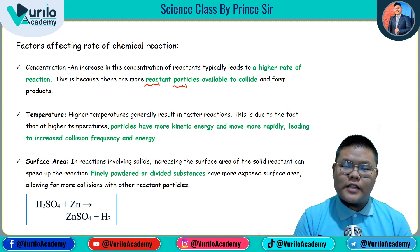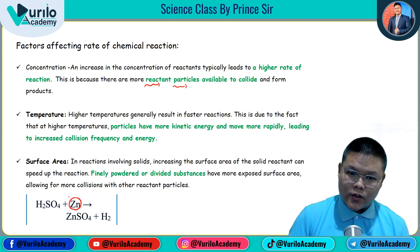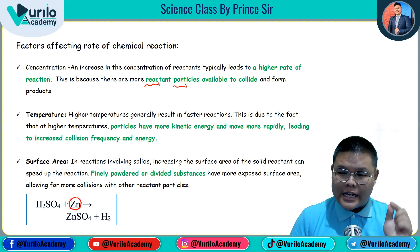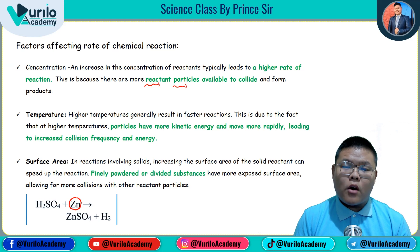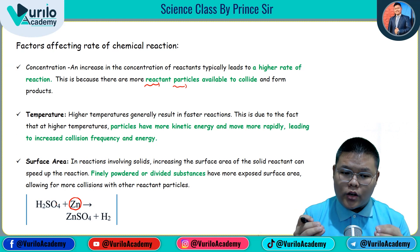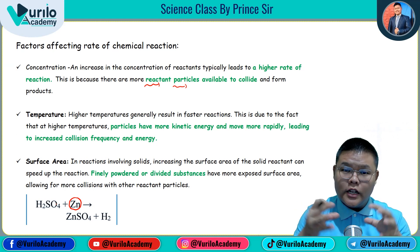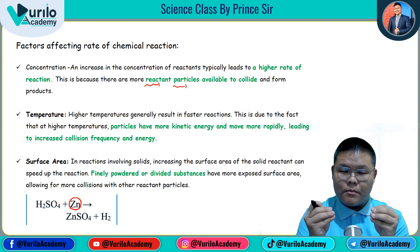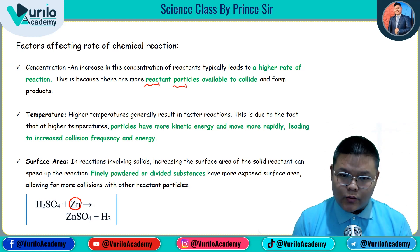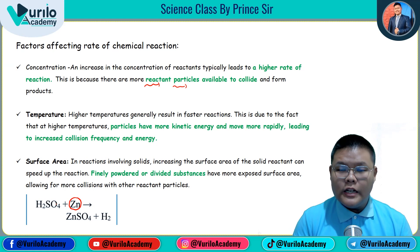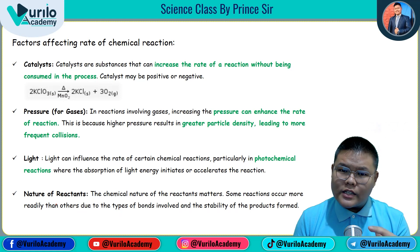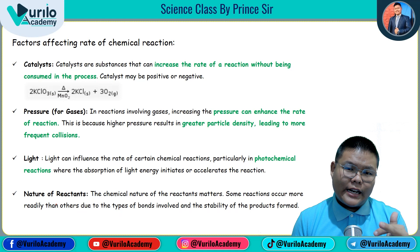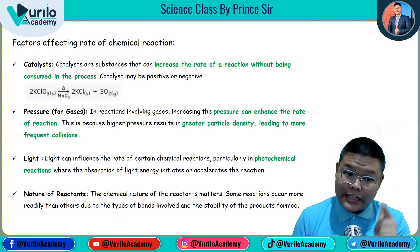Third factor: surface area. The classic example uses zinc. If you use a large zinc plate versus tiny zinc pieces versus zinc powder, the powder reacts fastest. Using powder increases surface area, so the zinc and H2SO4 react more easily and the product is reached faster. Fourth factor: catalyst — substances that increase or decrease the rate of chemical reaction. At class 10 level, catalyst generally increases rate, but it can also decrease rate.